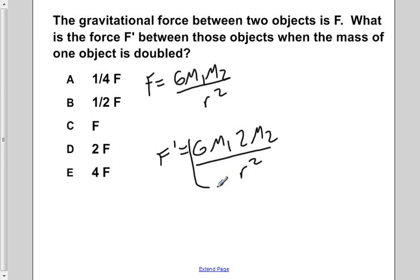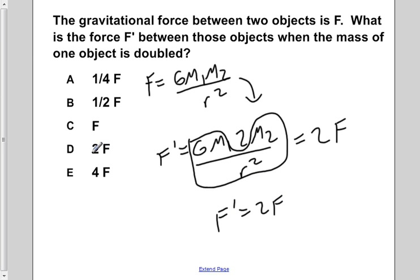Now this portion of our answer for F prime is simply the value for F, as up here. So F prime is, in fact, twice the value of F, so our answer would be D, two times F.